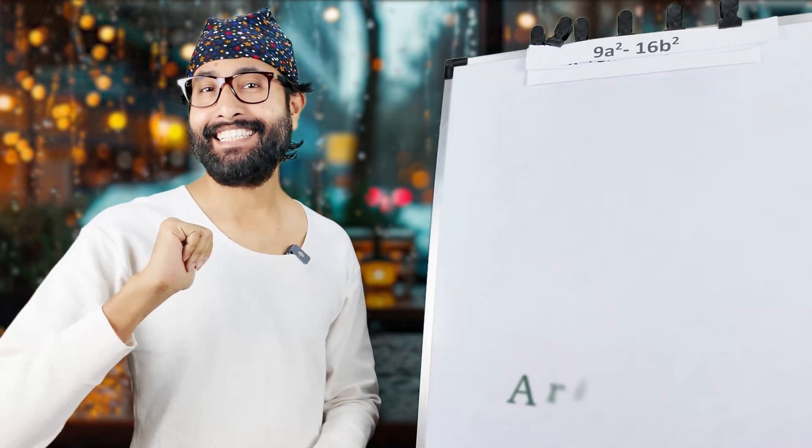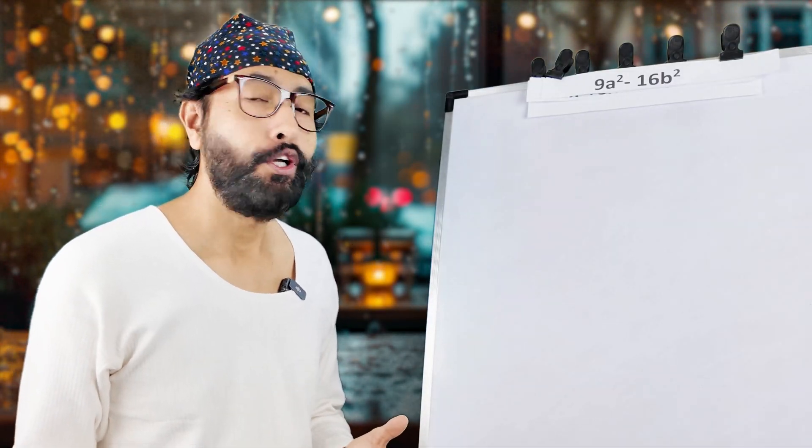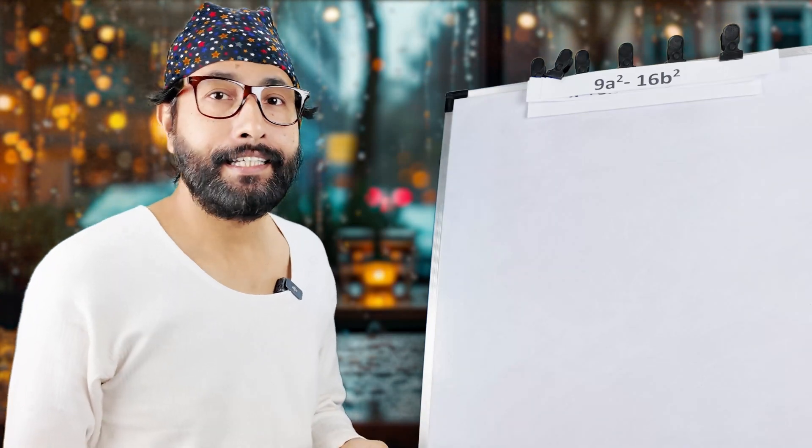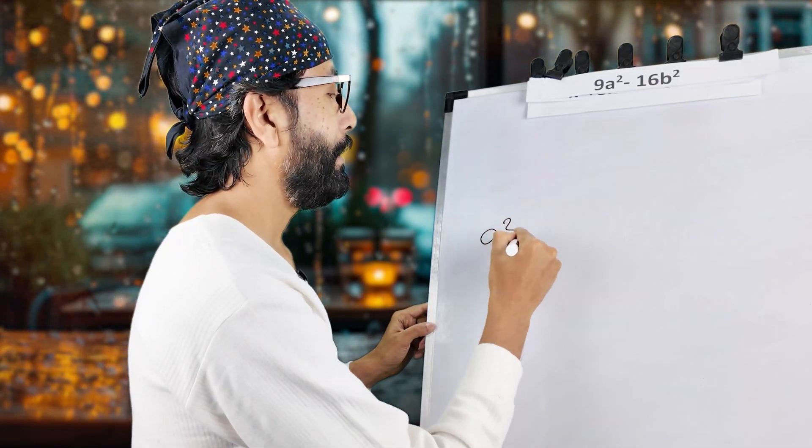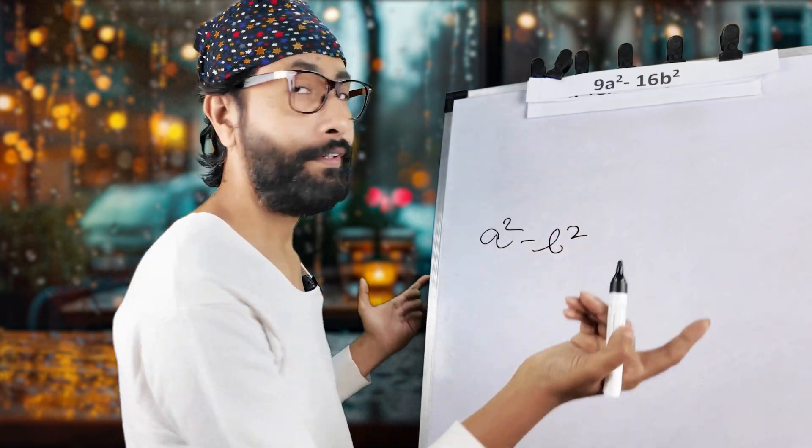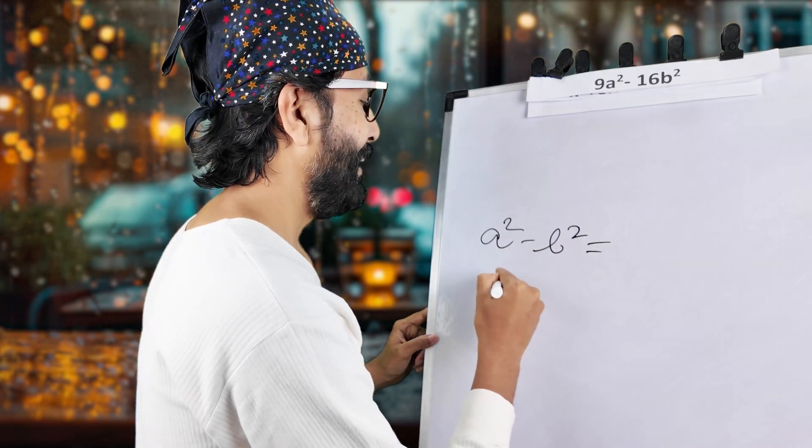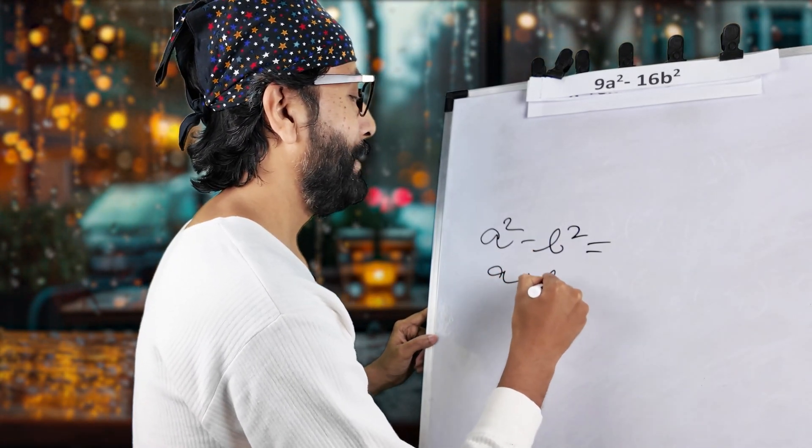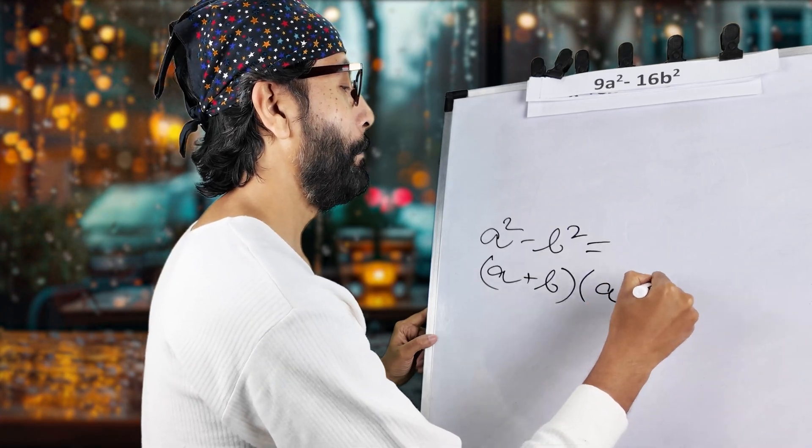Hi guys, this is Arindam. You're watching Brain Development. So basically, in case of factorization, what do you have to do? Most of the cases, you will have to align to a formula something like a square minus b square. And you know the formula, right? This is a plus b into a minus b.